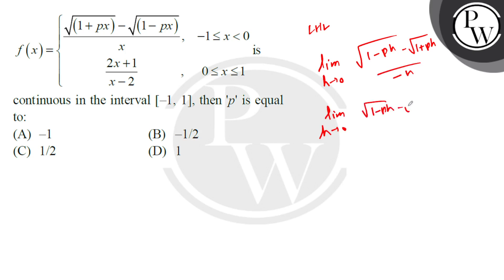and we multiply this by √(1-px) + √(1+px), and the whole divided by -h times √(1-px) + √(1+px).